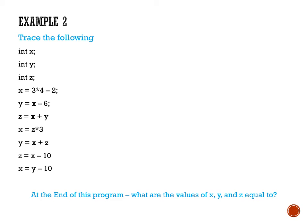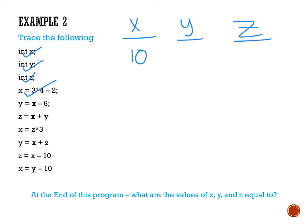The first thing we do when tracing is list all the variables potentially being changed. I can see an integer x, an integer y, and an integer z. Then x is assigned 3 times 4 minus 2. Using order of operations: 12 minus 2, so x starts at 10. Then y is assigned x minus 6, which is 10 minus 6, so y starts at 4. Then z is assigned x plus y, which is 10 plus 4, so z starts at 14. Then x is reassigned z times 3, which is 14 times 3, giving x a value of 42.